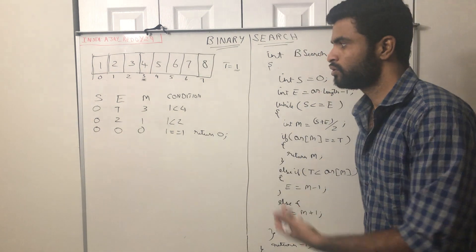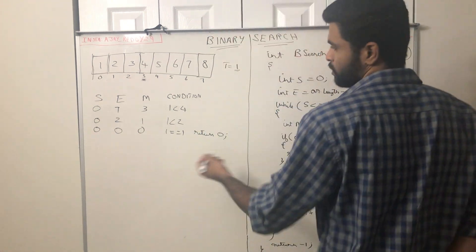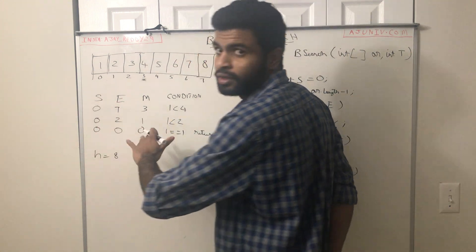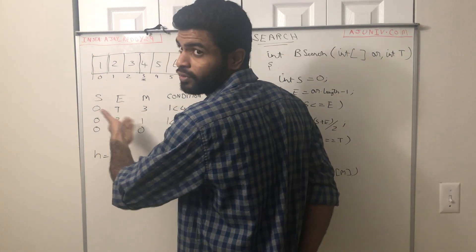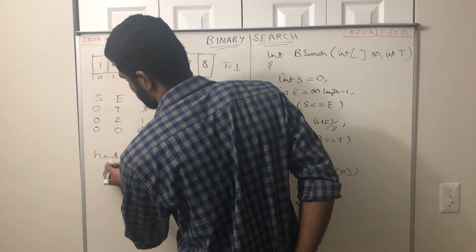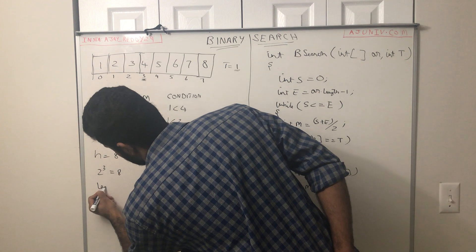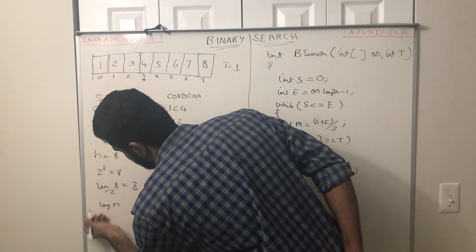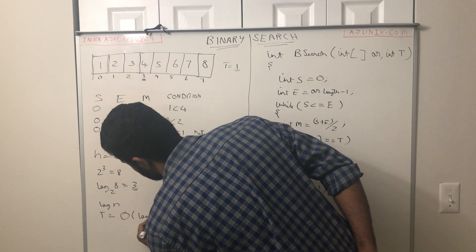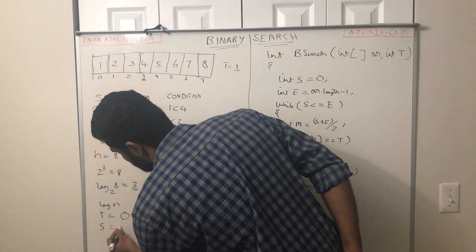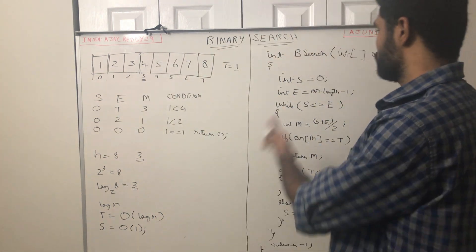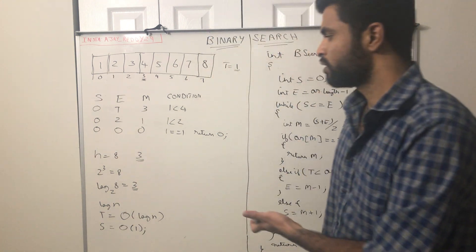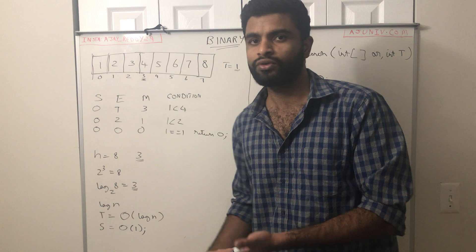Let's look at the time complexity. Here n equals 8, the length of the array. We performed 3 loop iterations. So 2 raised to the power 3 equals 8, which can also be written as log base 2 of 8 equals 3. Therefore the time complexity is O(log n). The space complexity is O(1) — constant space — because I am not using any temporary array or additional storage for this operation.